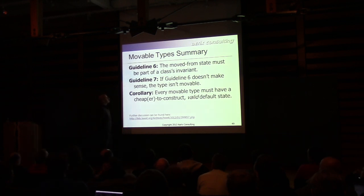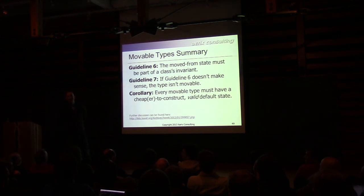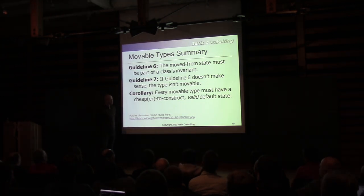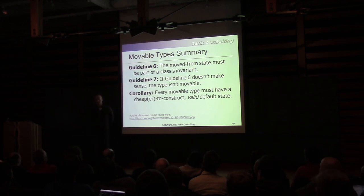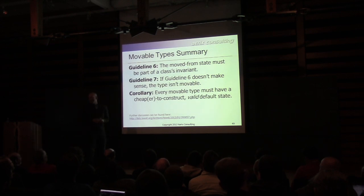Guidelines: the moved-from state should be part of the class's invariants. Guideline seven: if that doesn't make sense, the type isn't movable. Corollary: every movable type should have a cheaper-to-construct valid default state. Sean Parent disagrees with at least some of this. We're moving on.